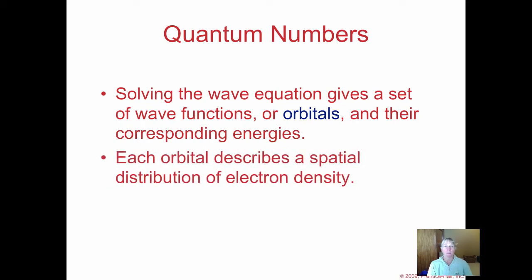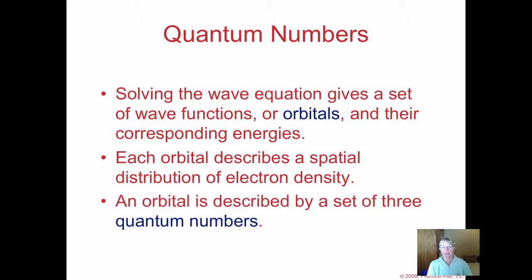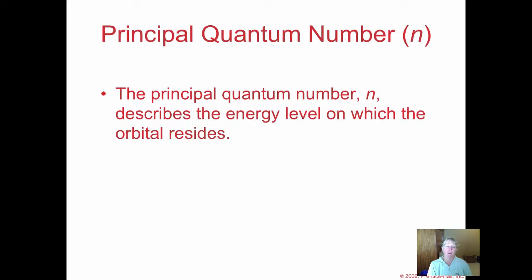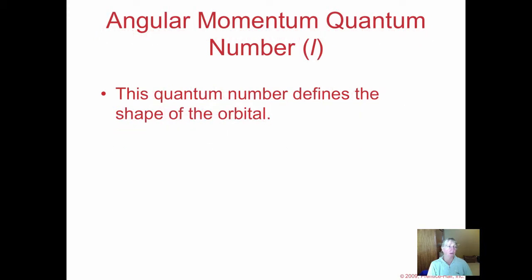These wave functions are also called orbitals. You can find the energy of those orbitals as well as the shape. Each orbital describes a spatial distribution of electron density. An orbital is a location where there's a high probability of locating an electron. It's described by a set of three quantum numbers. The principal quantum number is your energy level, always integers greater than or equal to one. There are seven known energy levels.